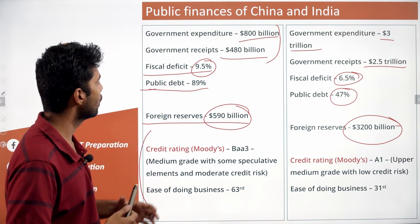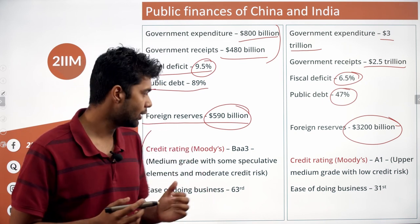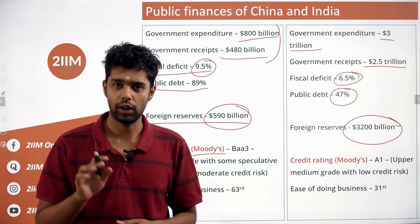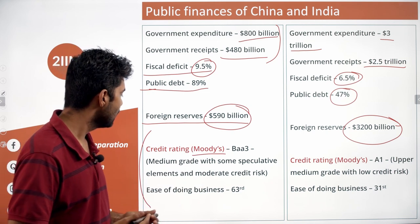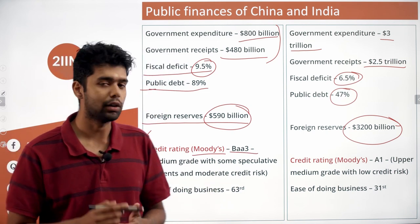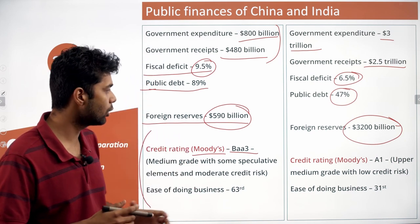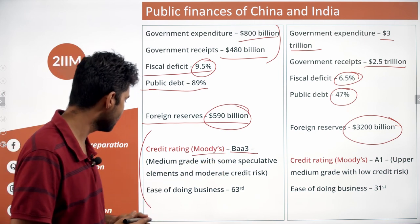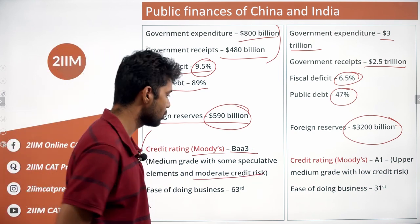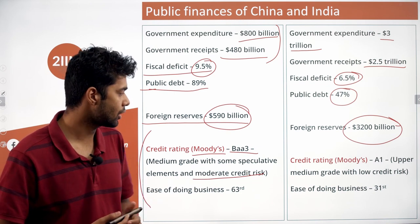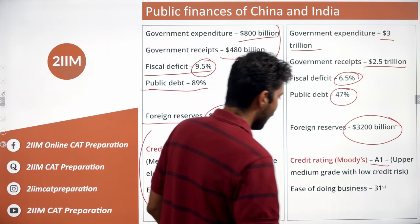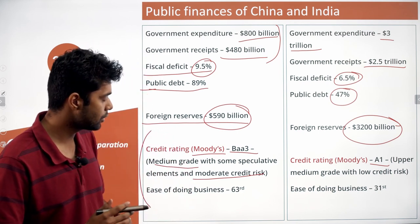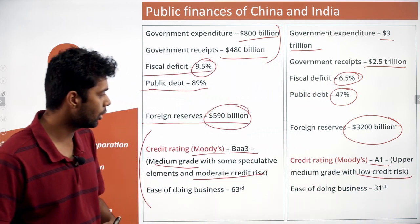Credit rating and ease of doing business reflect investor sentiment. Using Moody's rating scale (AAA being the best, C the worst), India is rated BAA3 — medium grade with some speculative elements and moderate credit risk. China is rated A1 — upper medium grade with very low credit risk — significantly higher than India. A higher credit rating attracts more foreign investment.